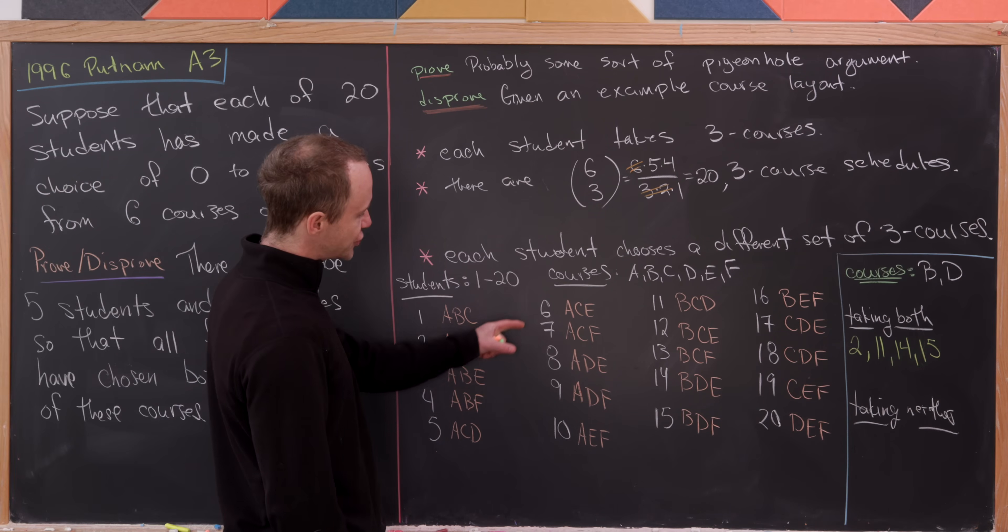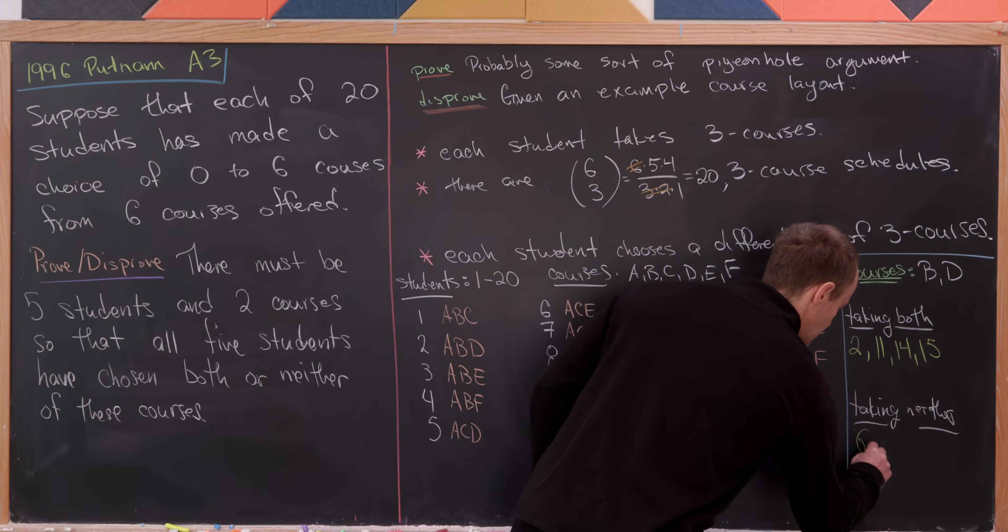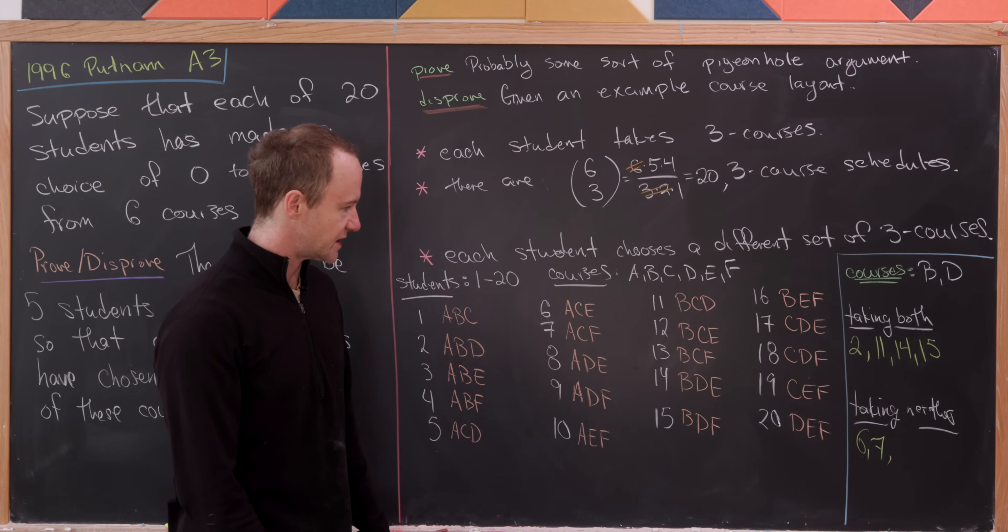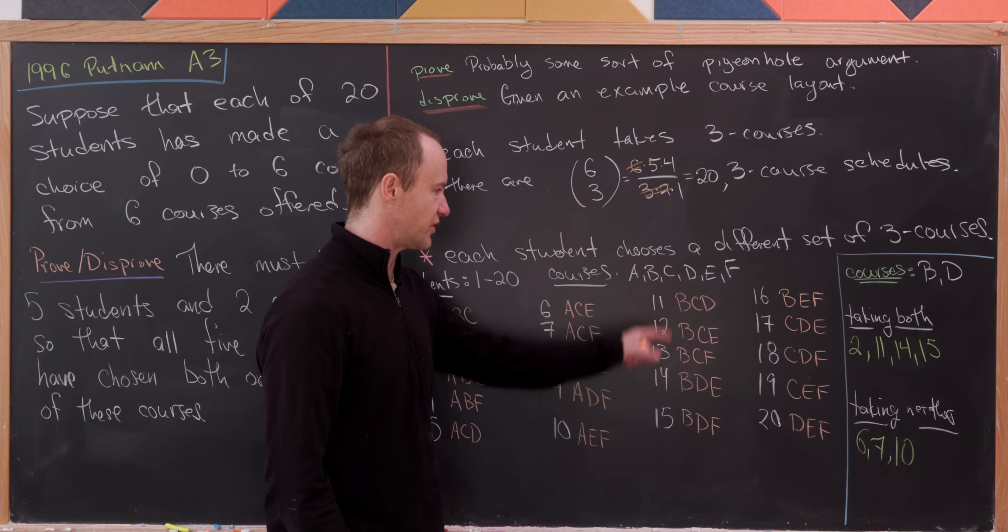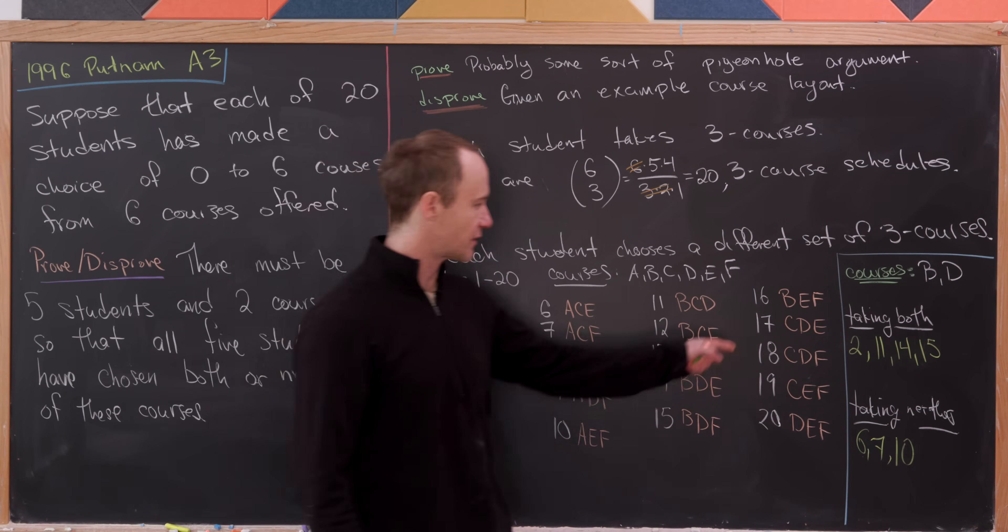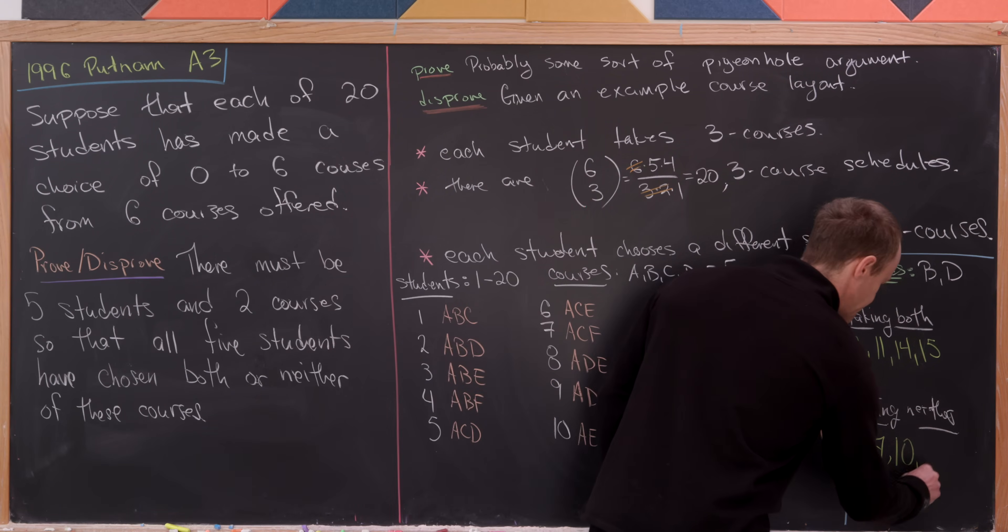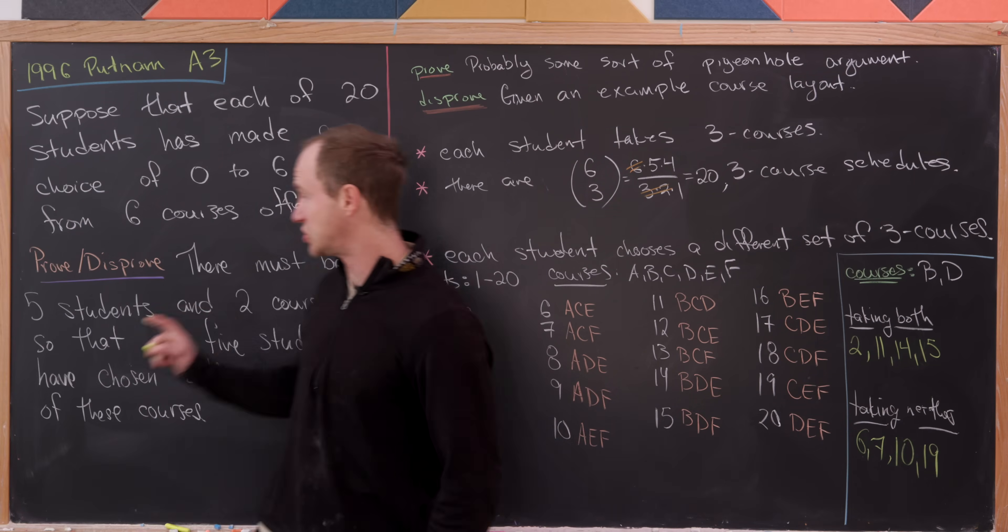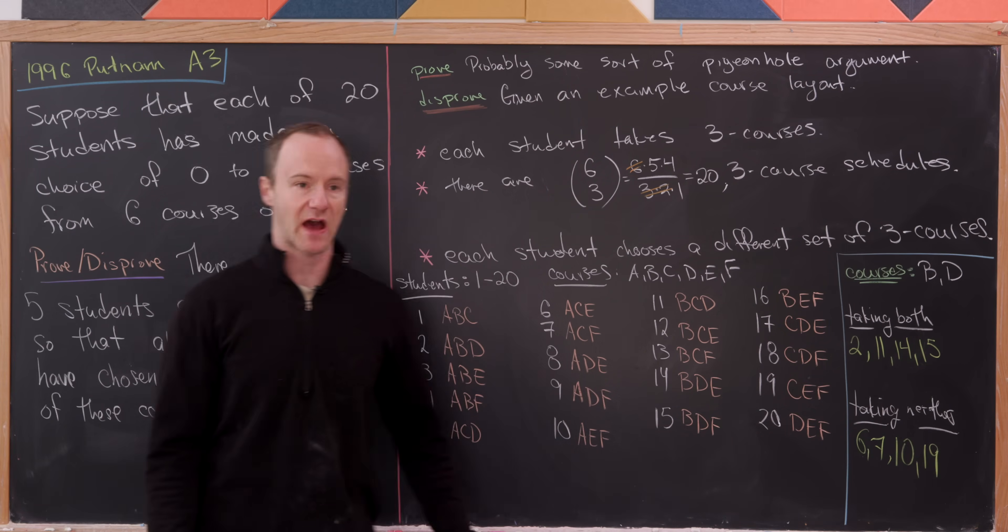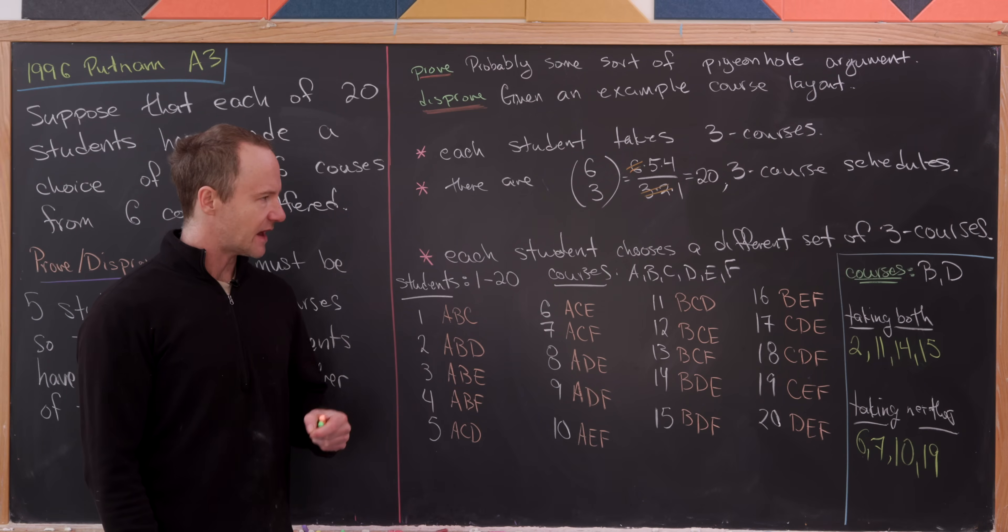So let's find all of the students taking neither B nor D. So let's see. The first two people come in a row. It's person 6 and person 7. And then the next person is person 10. And then let's see. All of these that start with B obviously can't work. And here we have CD, CD. Here we have a D. So the last person is person 19. So check it out. We didn't achieve this goal of having five students not taking this course either.